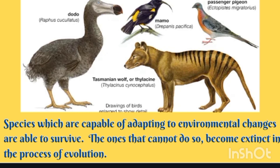The ones that cannot adapt become extinct in the process of evolution. Animals which you can see on the screen were not able to adjust with the changes in the environment, and that's why they were extinct — there are no more today. These animals are the Dodo, Tasmanian Wolf, Mamo, and Passenger Pigeon.